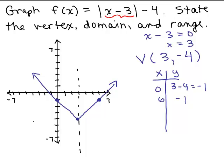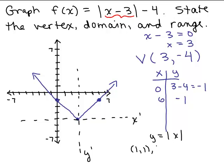Another way some people do this is they dot in this line and then kind of pretend that's the origin — this is called the x-prime and y-prime axis sometimes. Then they just graph y equals absolute value of x: over 1 and up 1, over 1 and up 2, over 1 and up 3, over 1 and up 4, et cetera. Instead of plugging in real numbers, if I know that's the vertex, I go from the vertex over 1 and up 1, over 2 and up 2, over 3 and up 3, over 4 and up 4, and also in the opposite direction.